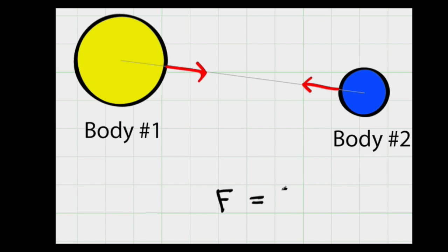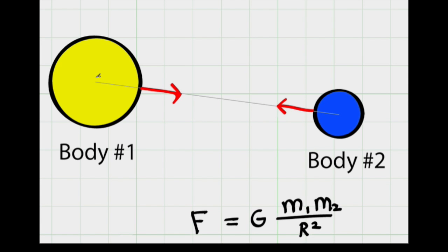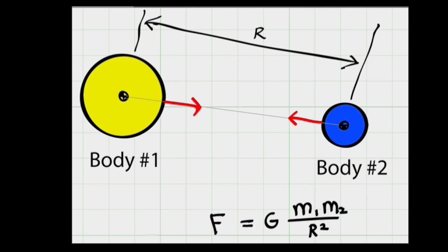Force is equal to a constant times the mass of body 1, the mass of body 2, and then divided by the radius squared. To get the radius, let's sketch in the center of mass of body 1 and the center of mass of body 2.